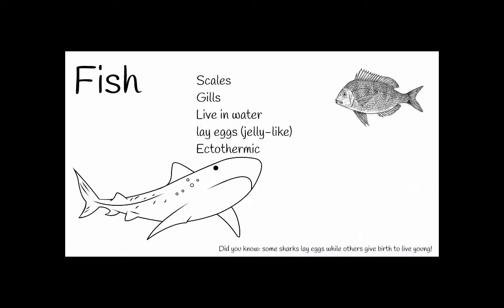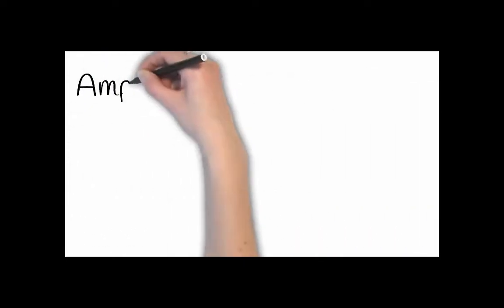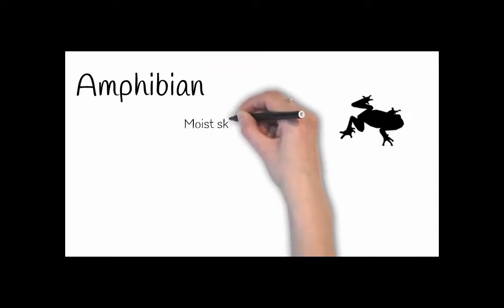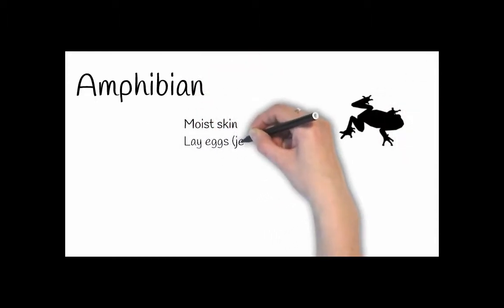And last but not least, amphibians. Amphibians are characterized by their moist skin, they lay jelly-like eggs, they can also breathe through their skin, and they are also cold-blooded animals, so they are ectothermic.